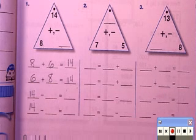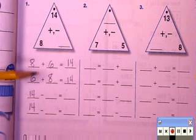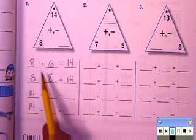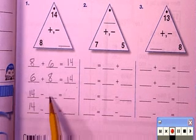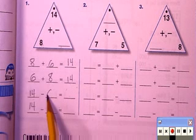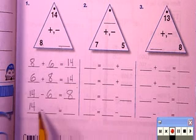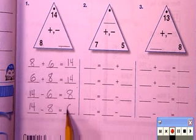I think we have all the information we need to finish the rest of the fact family. So fourteen take away any one of these, well let's say six, is going to equal what? Eight. And fourteen take away eight is equal to six.